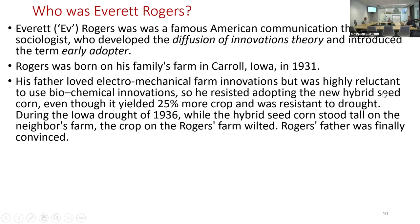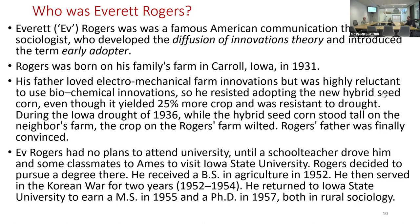At the time, the federal government was really trying to push innovation in agriculture to ensure that everybody is fed. Rogers' father resisted adopting the new hybrid seed corn, which was pushed strongly by local and federal government, despite the fact that it produced 25% more yield, and was more resistant to drought and disease. In 1936, his father finally saw how the hybrid seed corn stood tall on neighbors' farms while his own was withered, and was finally convinced—it took comparison with peers.